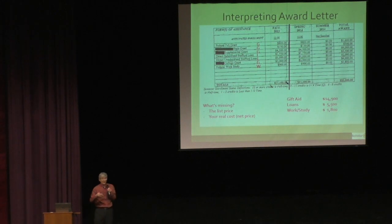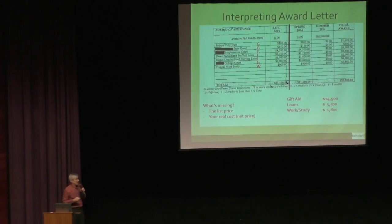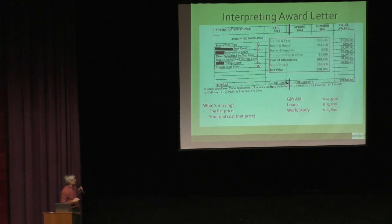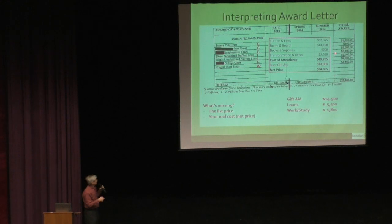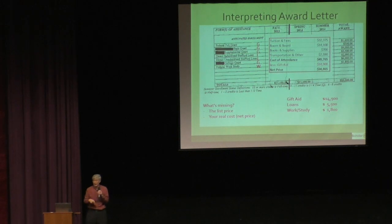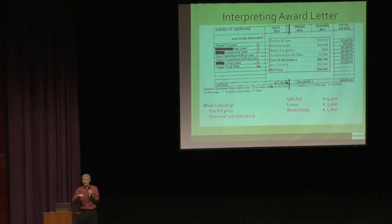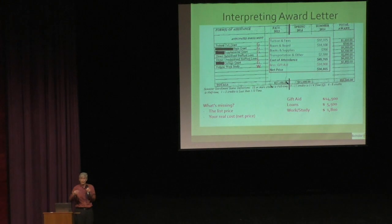What's missing from the award letter is the starting price and what you're going to pay after subtracting gift aid. Looking up that college's cost of attendance, the starting price was about $50,000. Subtracting the gift aid, the net price — the true cost for one year — is just under $35,000 a year. Keep this in mind; we'll come back to it. First I want to talk about the different types of aid and how to assess your need and merit profiles against college awarding profiles.